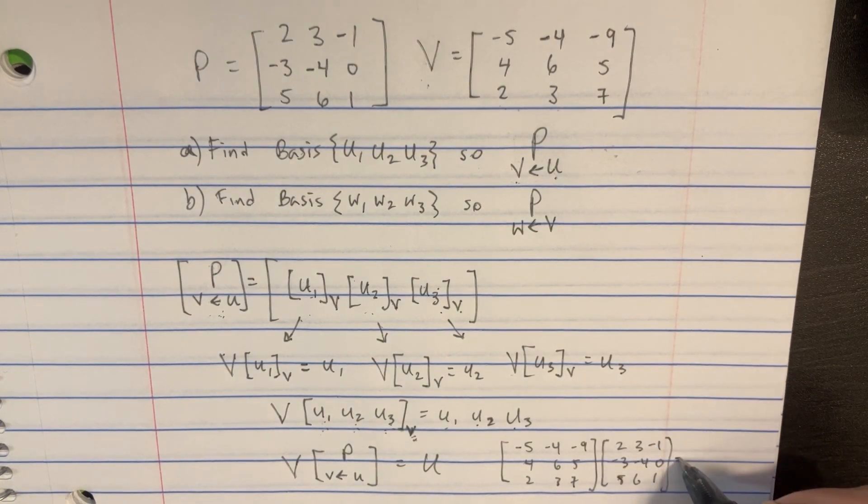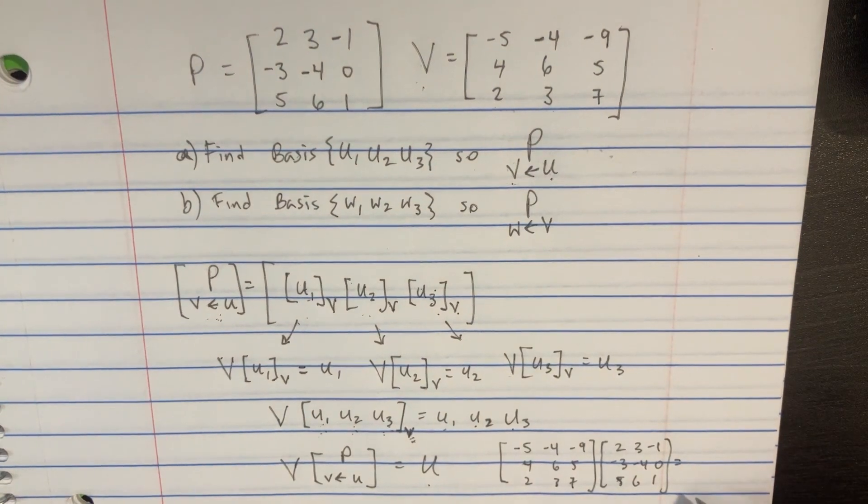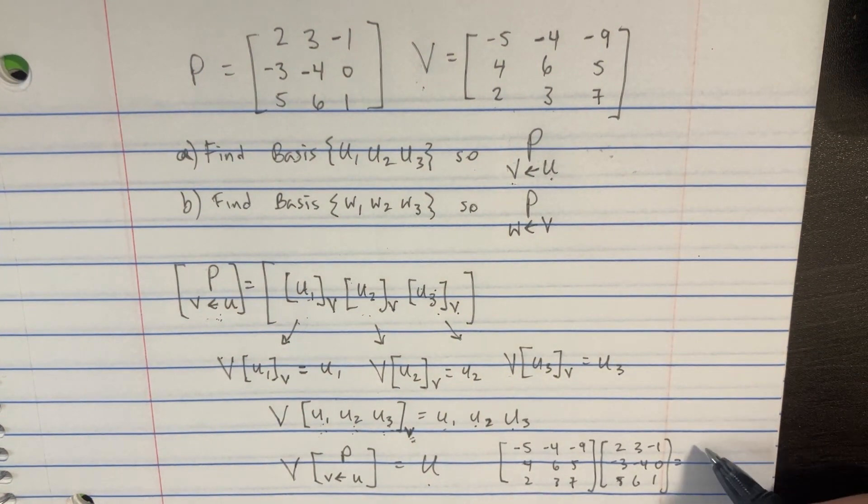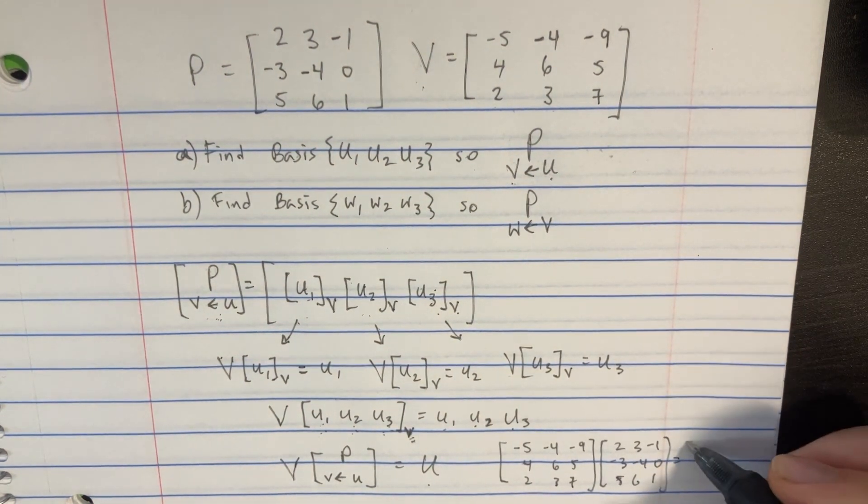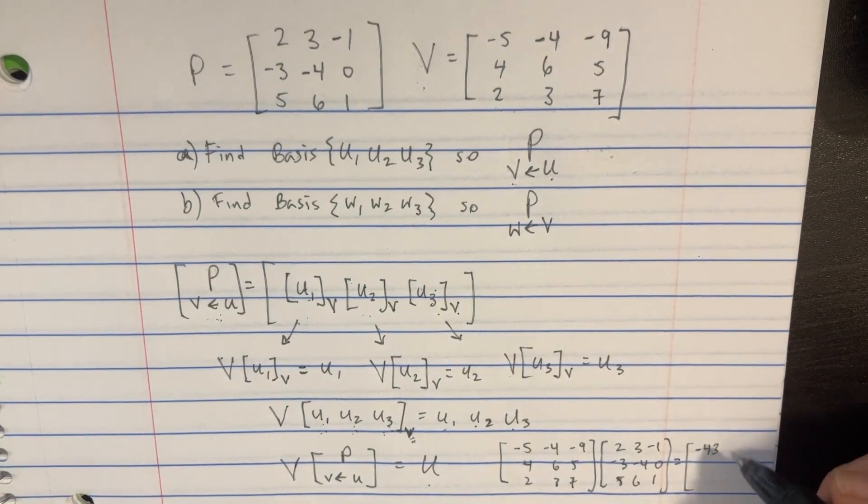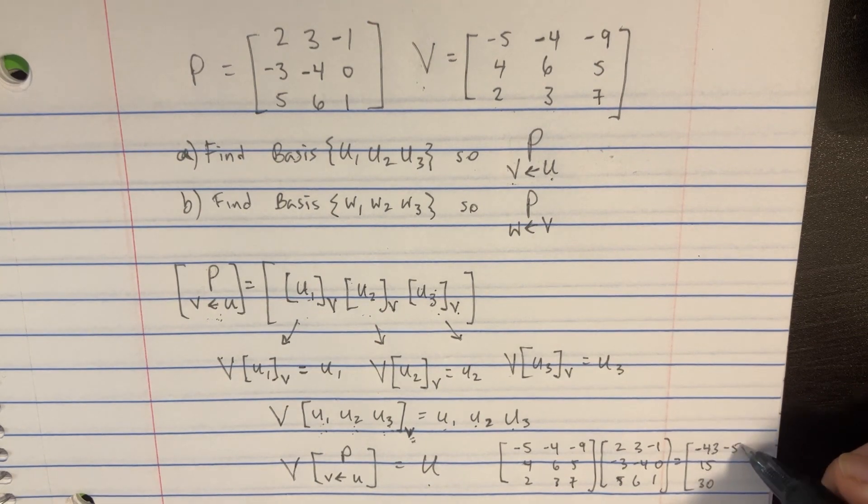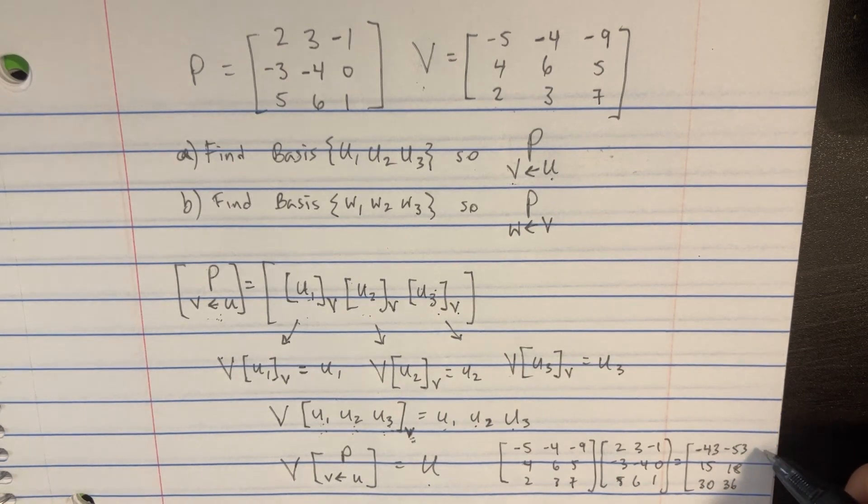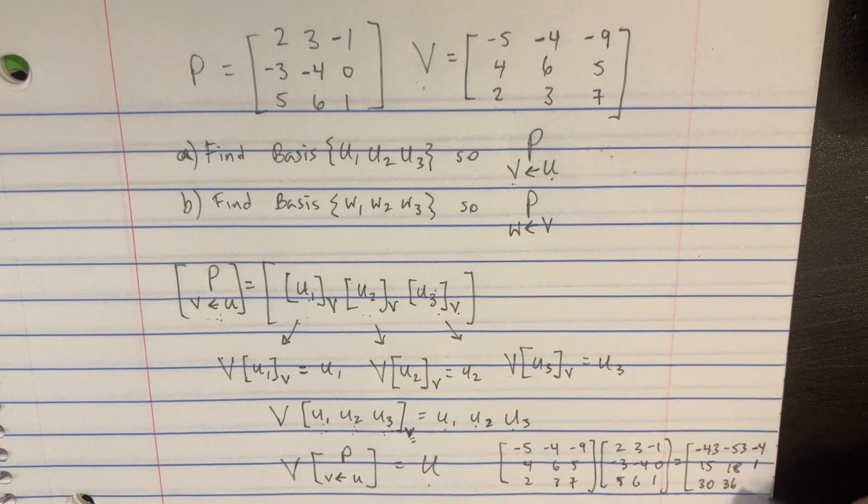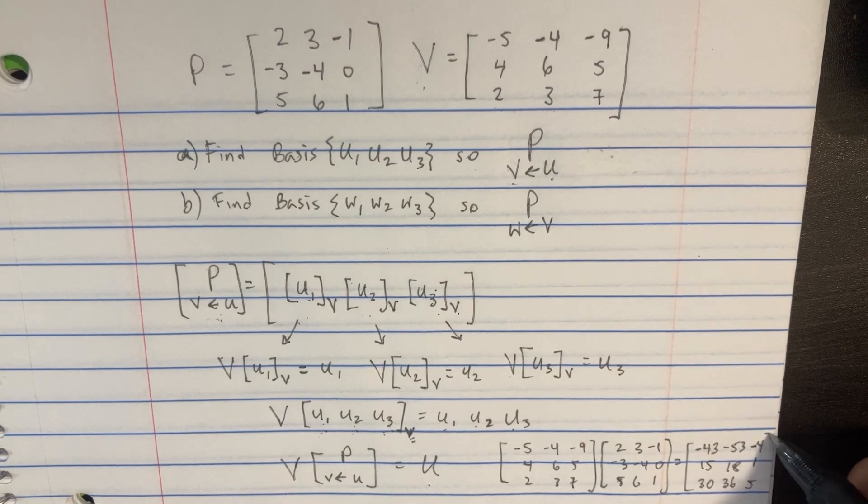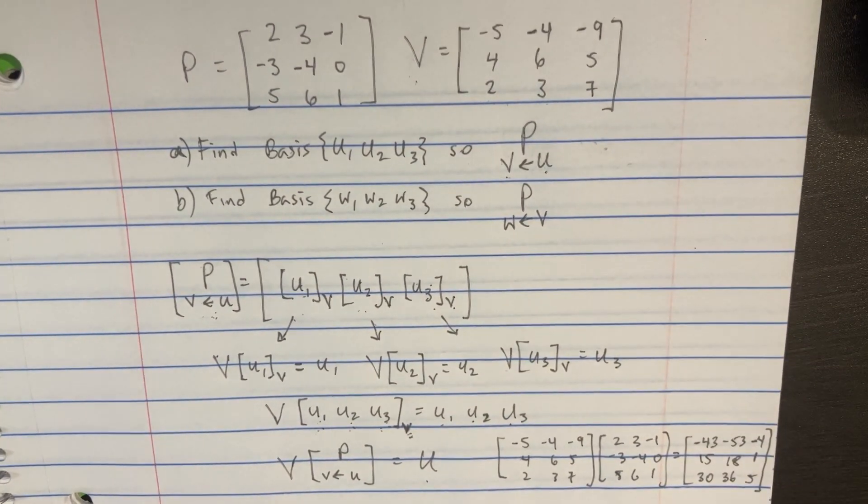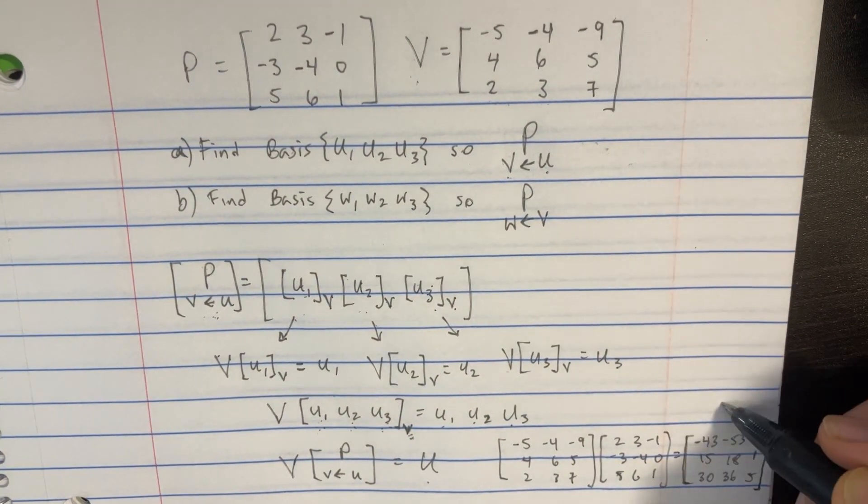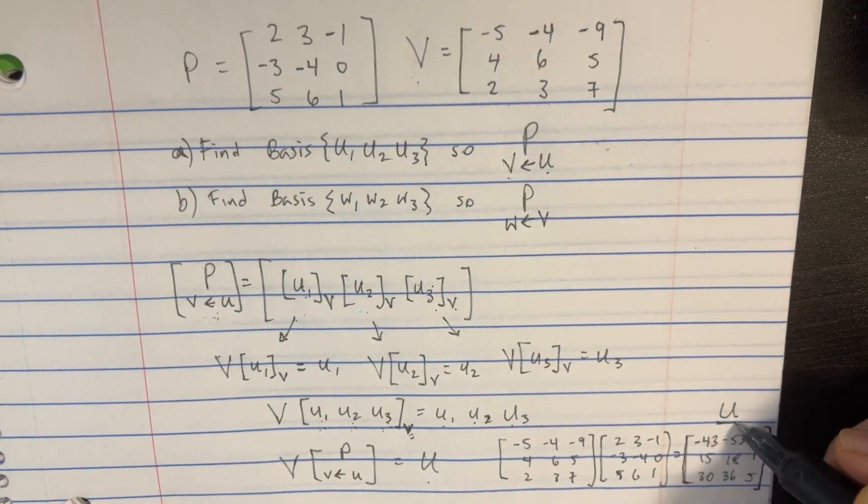And then you can multiply these together to get the U. But I'm just going to use the calculator real quick. So this is actually just going to be equal to negative 43, 15, 30. And then we have negative 53, 18, 36. And then the final one is negative 4, 1, and 5. So these are the answers for that U matrix down there. This is what U equals. This is the U matrix.